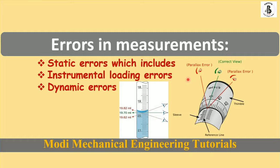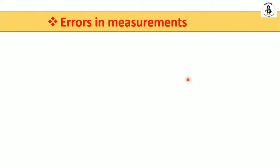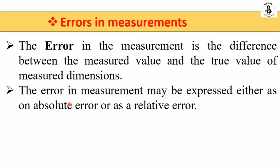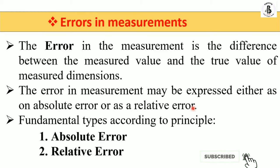Starting with the definition: the error in measurement is the basic difference between the measured value and the true value of the measured dimension, or the difference between the measured value and the standard value. The error in measurement may be expressed either as an absolute error or a relative error.